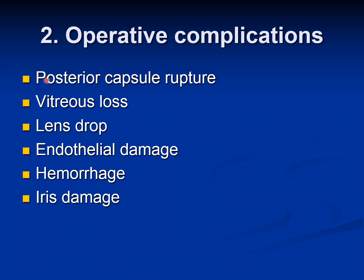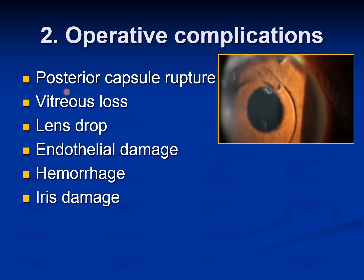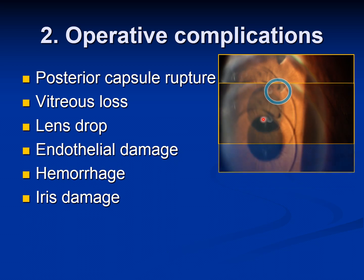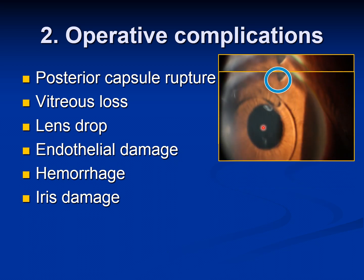Then come the operative complications. First is posterior capsular rupture. When the posterior capsule is ruptured, you cannot place the posterior chamber lens behind the pupil, so you have to put the implant in front of the pupil, as you can see in this photograph. When the posterior capsule ruptures, vitreous comes into the pupil and anterior chamber. You have to clear it during surgery and make a small iridotomy for circulation of aqueous humor.